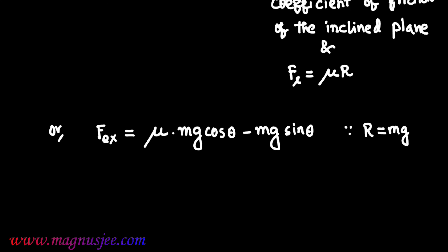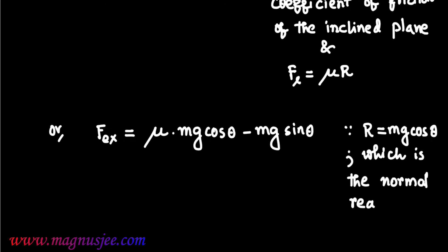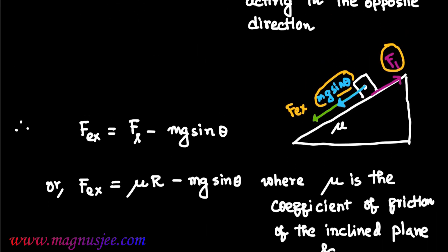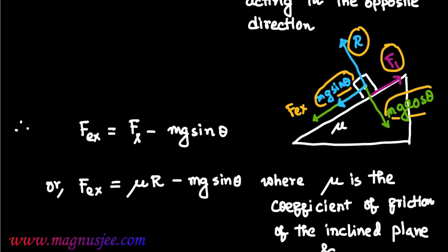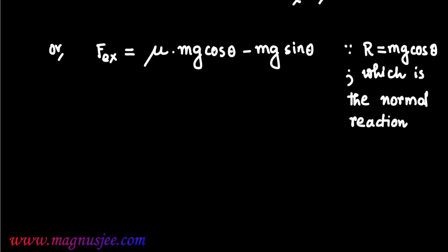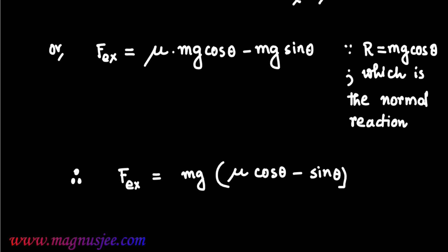Since R equals Mg cos theta, which is the normal reaction acting on the body by the inclined plane, and Mg cos theta is the rectangular component of weight acting perpendicular to the inclined plane, R equals Mg cos theta at equilibrium. Therefore, FEX equals Mg(mu cos theta minus sin theta).